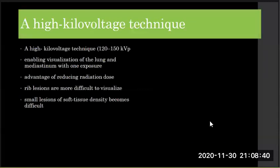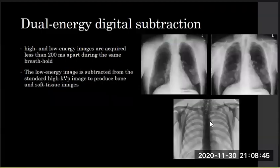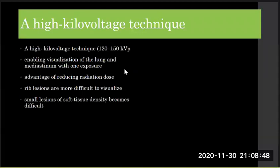We have the high KV technique for plain X-ray. With the high KV technique, the patient is given X-ray kilovoltage between 120 and 150, allowing visualization of the lung and the mediastinum in one exposure. It is also good for reducing the radiation dose. However, the disadvantage of the high KV technique is that rib lesions and small soft tissue density may be difficult to visualize.